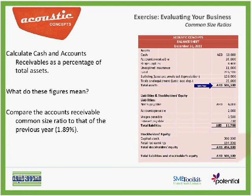Here we can compare. If it is higher than last year — last year, the accounts receivable common size ratio was 1.89%. When we compare it to the current year accounts receivable ratio of 5.13%, we realize that it is much higher. If this increase was not planned, this might mean that Acoustic Concepts may need to step up their collection process or put tighter limits on the credit they extend to their customers.